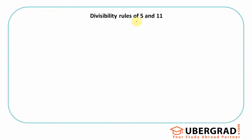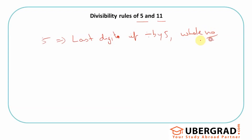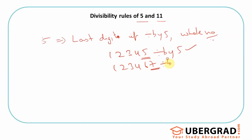For 5, just look at the last digit. If the last digit is divisible by 5, then the whole number is. For example, 12345 ends in 5, so it is divisible by 5. But 12346 ends in 7, which is not divisible by 5. Another way to see it: the last digit must be either 5 or 0 — those are the only digits divisible by 5.